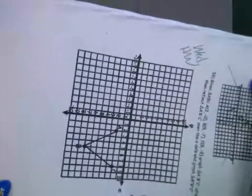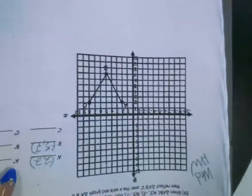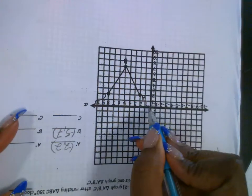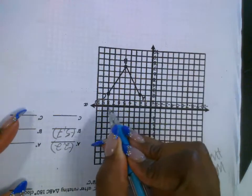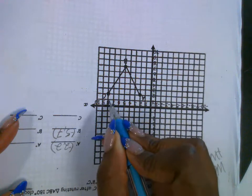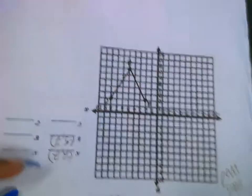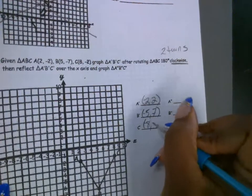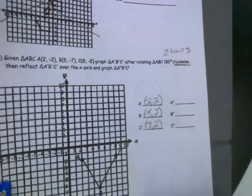And C — upside down again — you go over 8. That's negative 8 and up 1, 2. Negative 8 and positive 2.